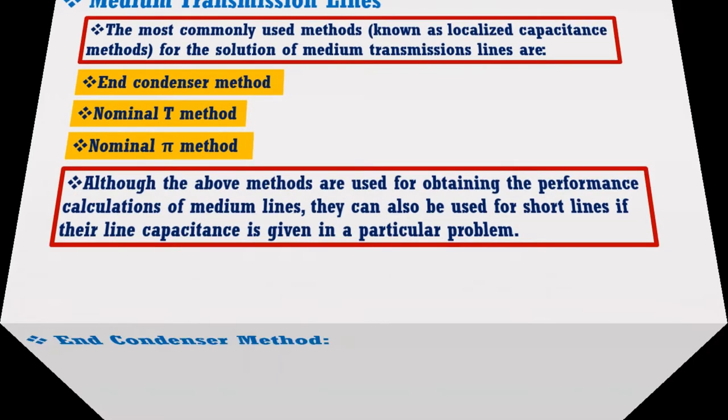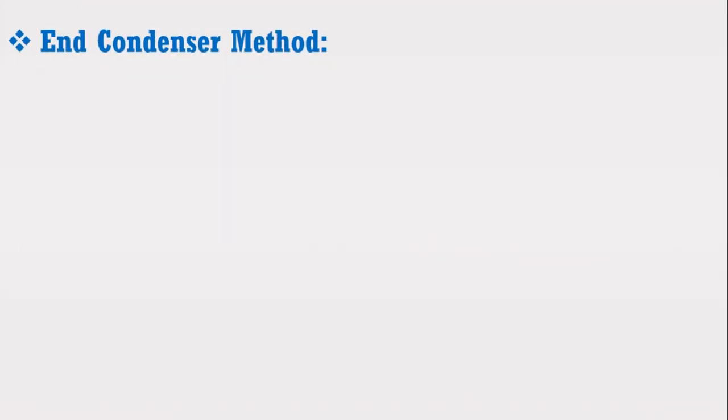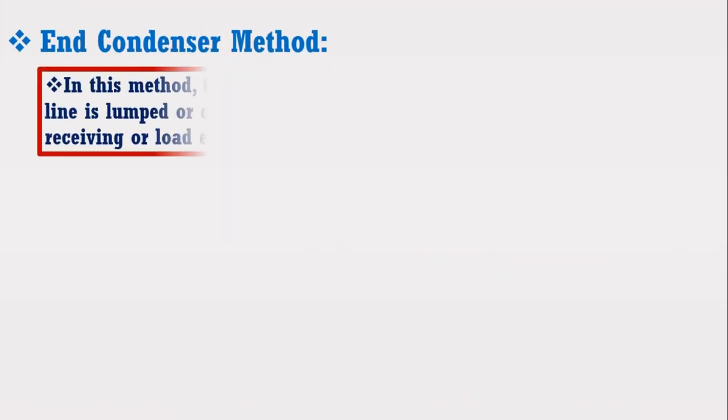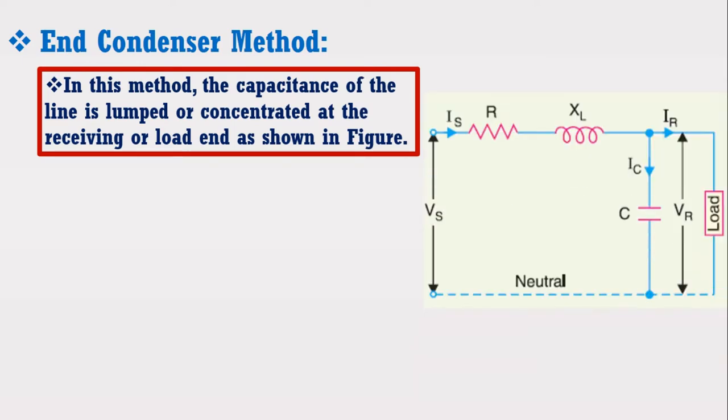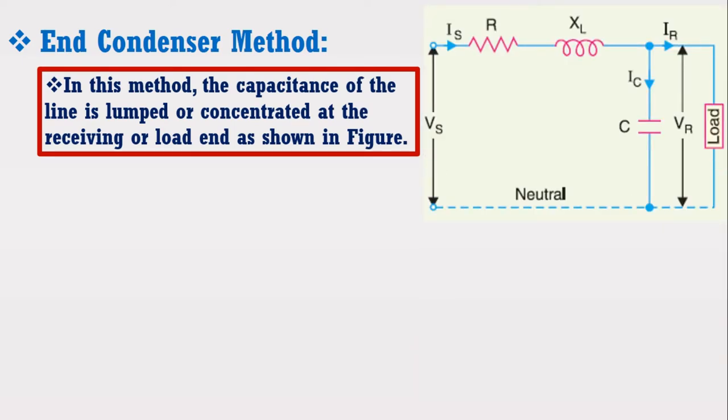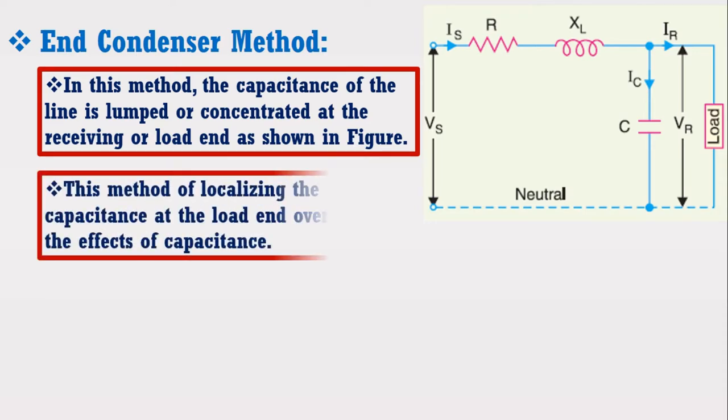Now, I am going to discuss the end condenser method. In this method, the capacitance of the line is lumped or concentrated at the receiving or load end as shown in the figure. This method of localizing the line capacitance at the load end overestimates the effect of capacitance.